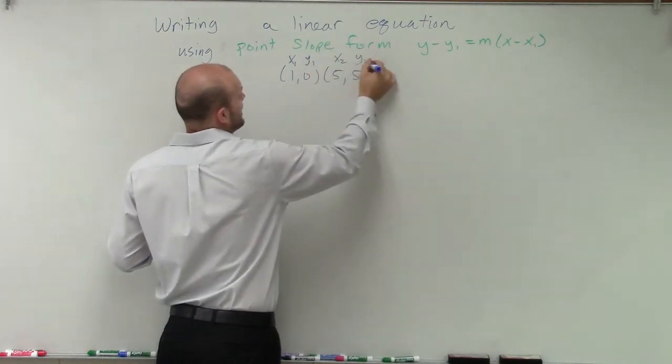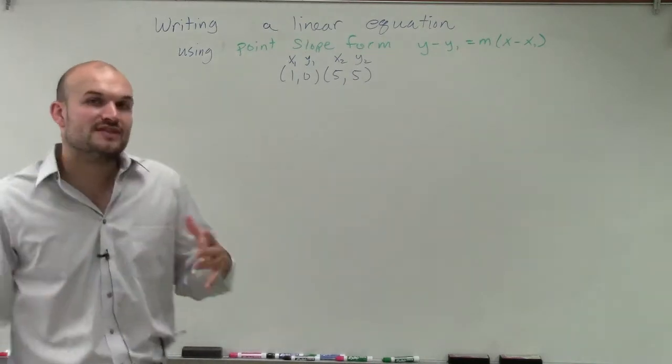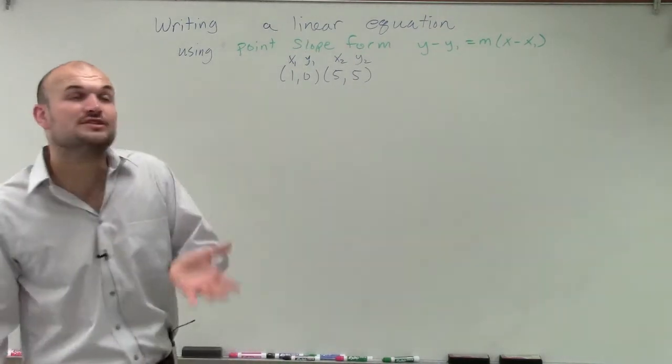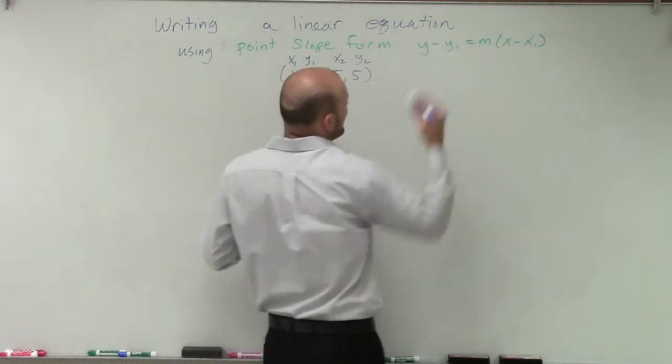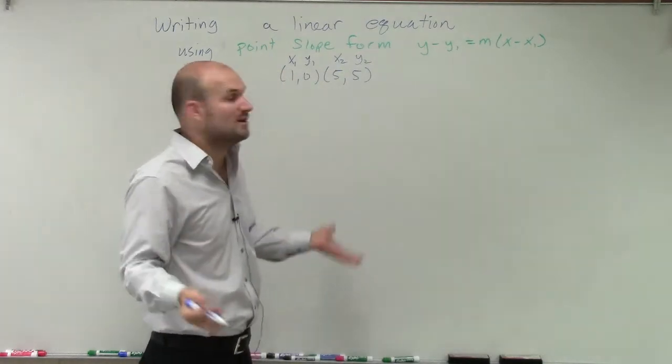And sometimes our definition of point-slope form gets students confused because they say, well, where did the y₂ go? We have x and y₁, but we don't have x and y₂.